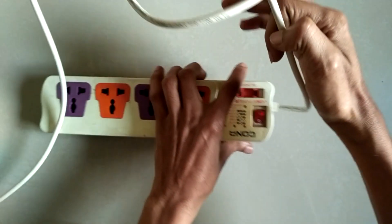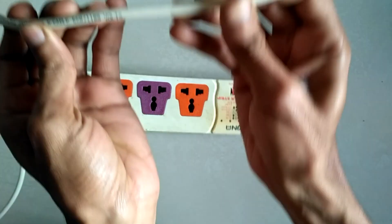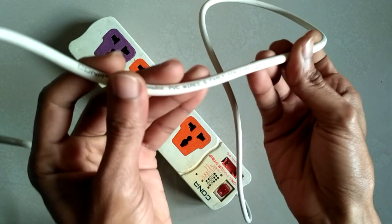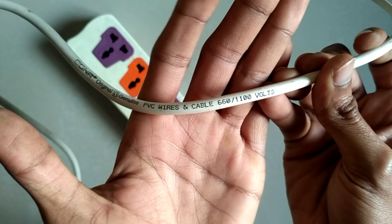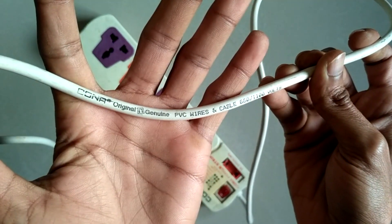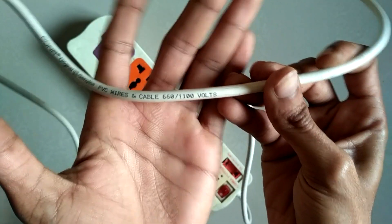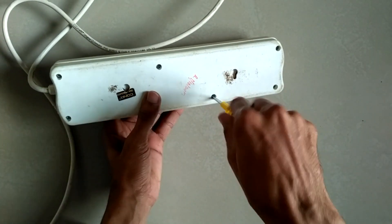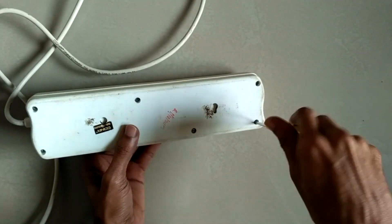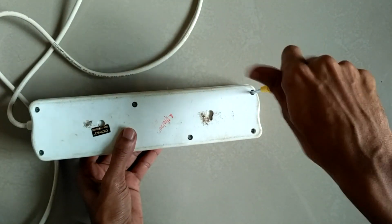You can see on this cable it reads 1100 volts. Let's remove the screws and see what happened inside the power strip.